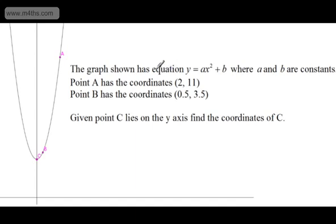In this question, we're told the graph shown has equation y equals ax squared plus b, where a and b are constants. Point A has the coordinates (2, 11), point B has the coordinates (0.5, 3.5). Given that point C lies on the y-axis, find the coordinates of C.